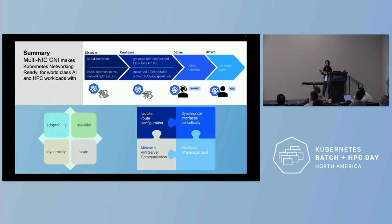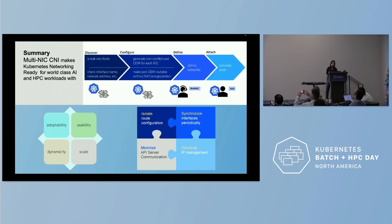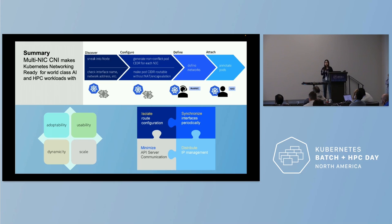In summary, ManVinix CNI can make the community networking ready for AI and HPC workload with not just adoptability and usability, but we are very concerned about dynamicity and scale with four key pieces: isolation, synchronization, minimization, and distribution.